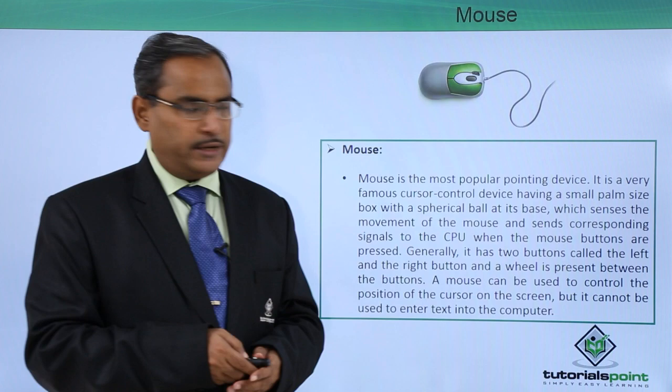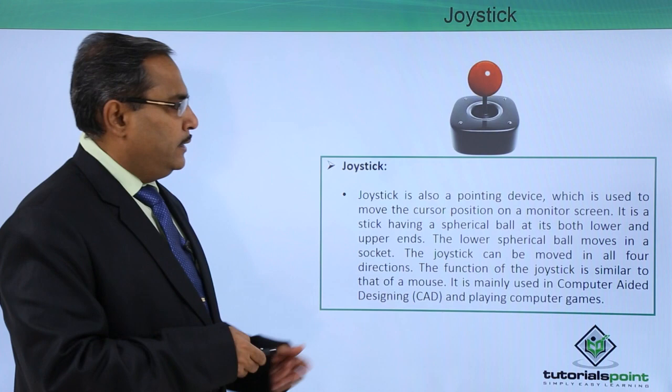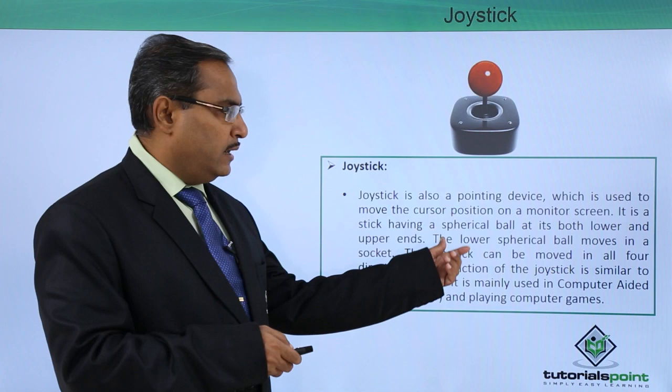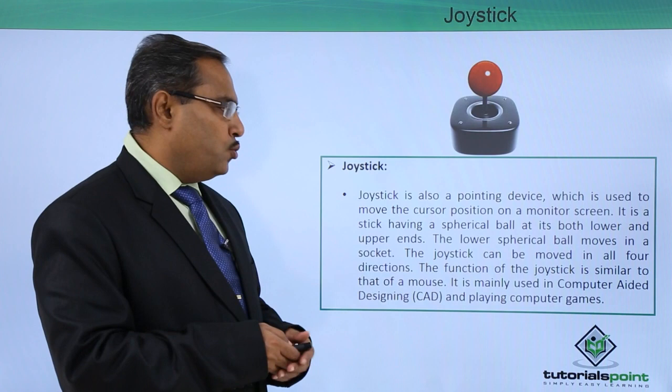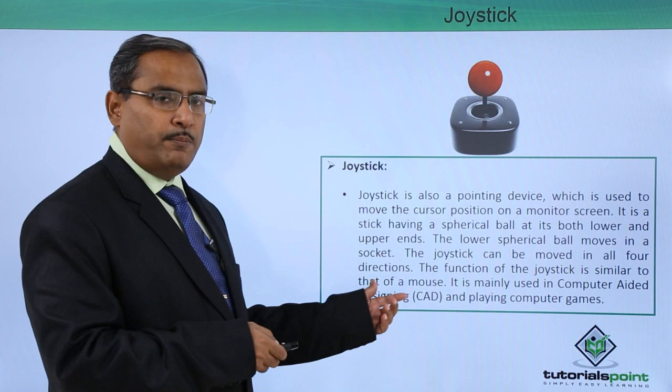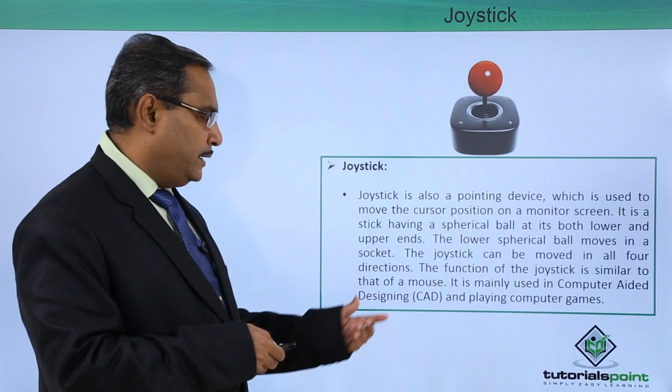Next is the joystick. Joystick is also a pointing device used to move the cursor position on a monitor screen. It is a stick having a spherical ball at both its lower and upper ends, with the lower spherical ball moving in a socket. The joystick can be moved in all four directions. Its function is similar to that of the mouse to change the position of the pointer, and it is mainly used in computer aided designing (CAD) and playing computer games.